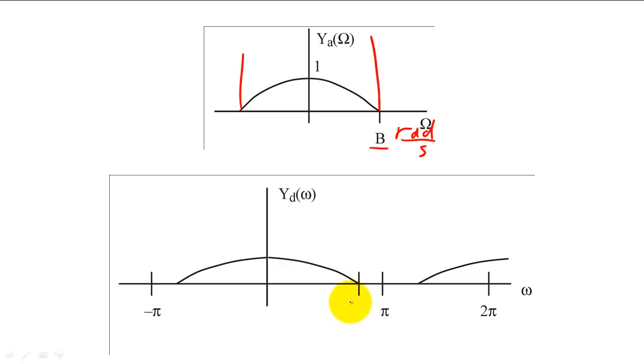Second, the DTFT of the signal will be bandlimited to B times T1 and will be replicated at every interval of 2 pi. The magnitude of the DTFT will also be scaled.